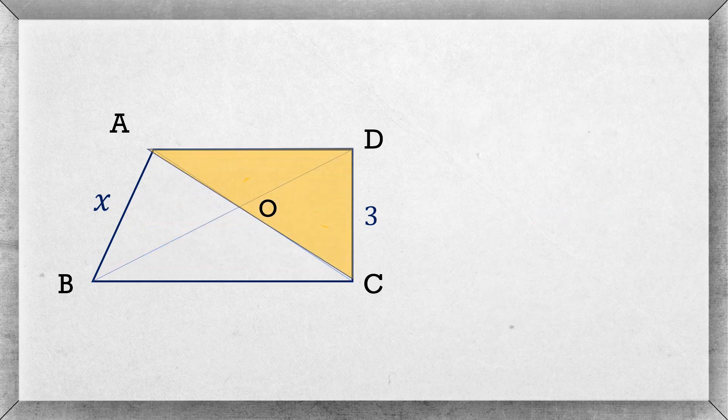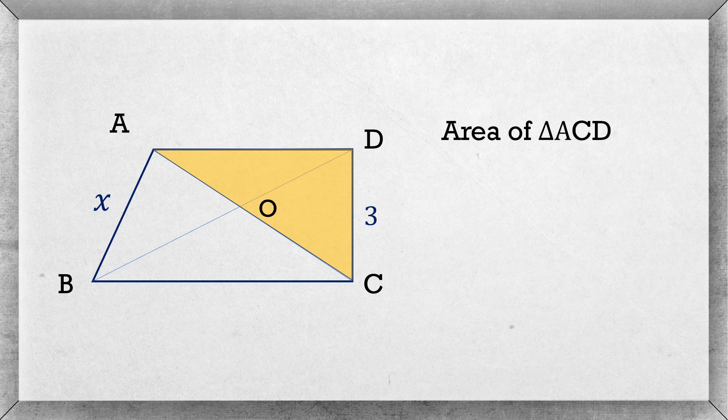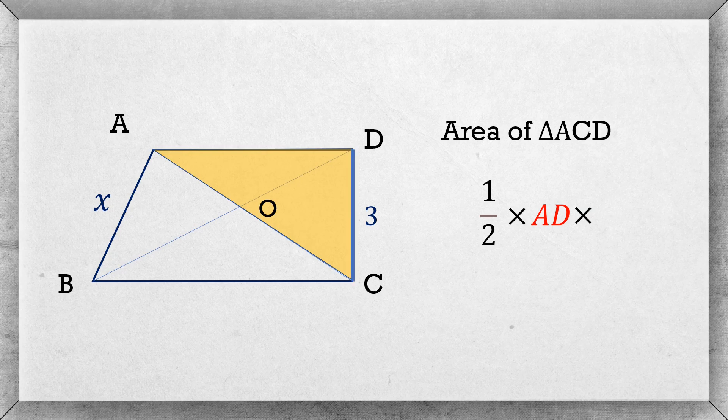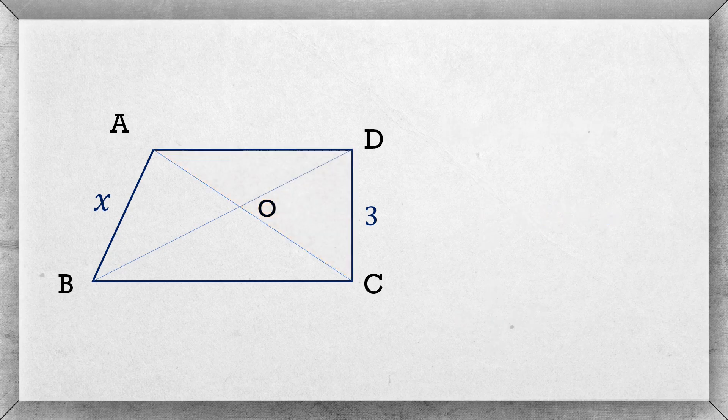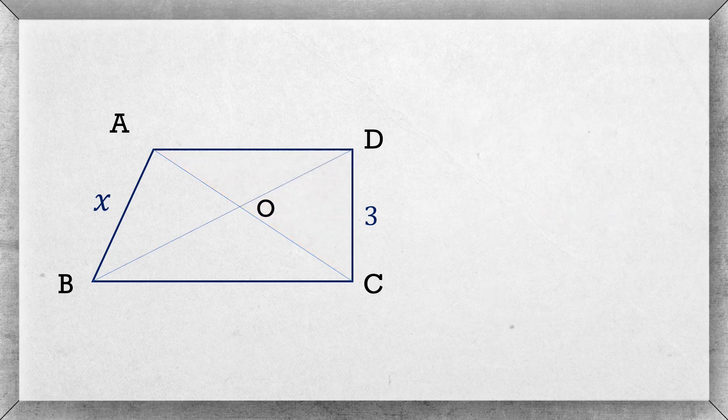Similarly for triangle ACD, area is equal to half into its base AD and height CD which is 3. So the area is 3/2 AD.